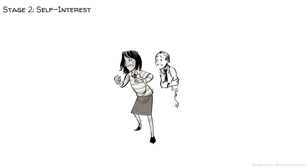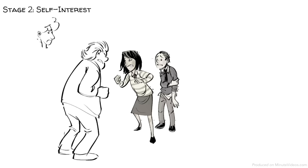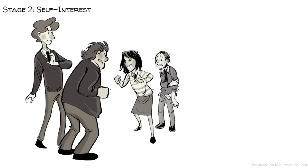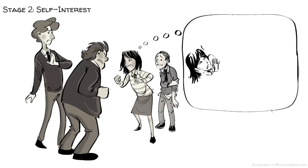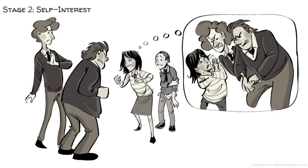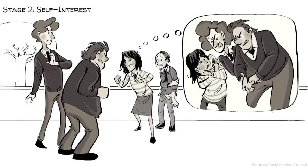At stage two, we are motivated by self-interest. Mary decides to intervene and help Tom. She knows that she might get punished, but she also knows that she could become a victim herself someday. If she helps Tom now, he might help her in the future. She is asking herself: what's in it for me?